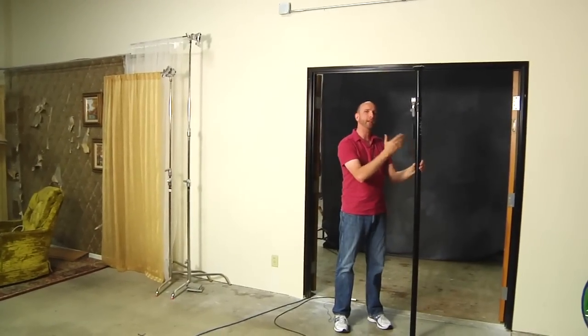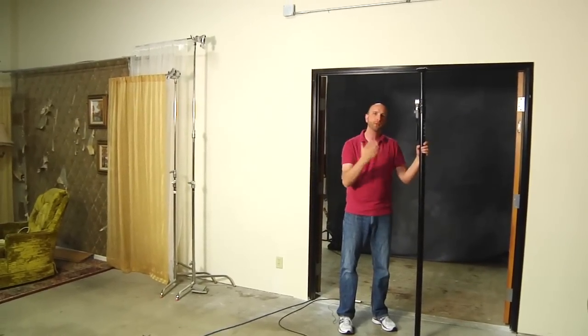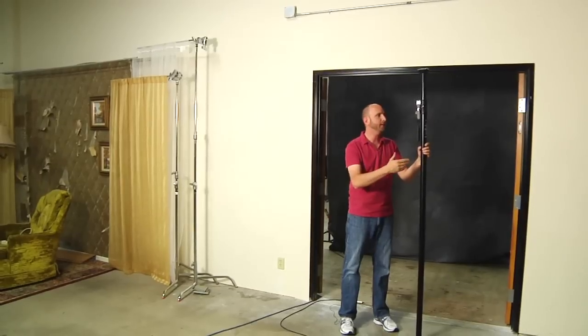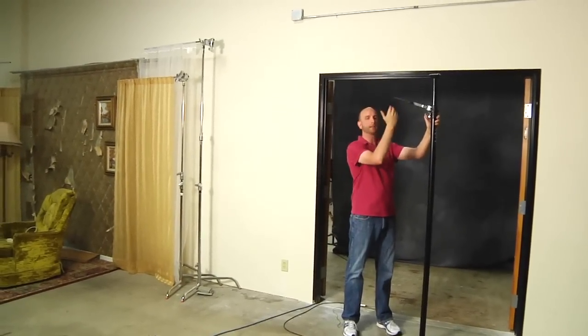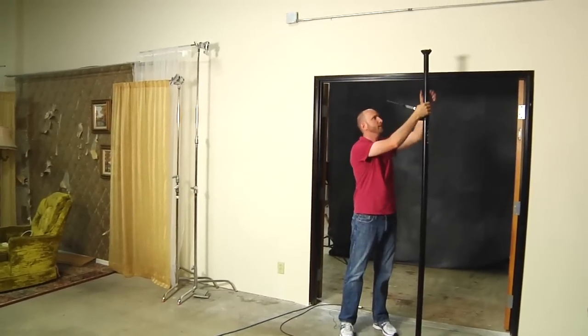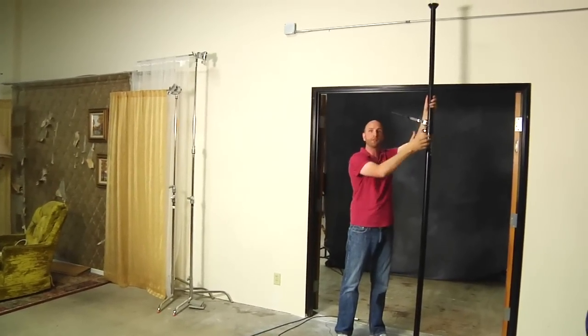Alright, let's take a look at the auto pole. Now I have one right here. Normally we'd have two in a system, but you'll get the idea of how to set this up. So the way this works is there's this lever here that unlocks and locks everything. And then you can actually expand this. And this goes all the way up to 12 feet.